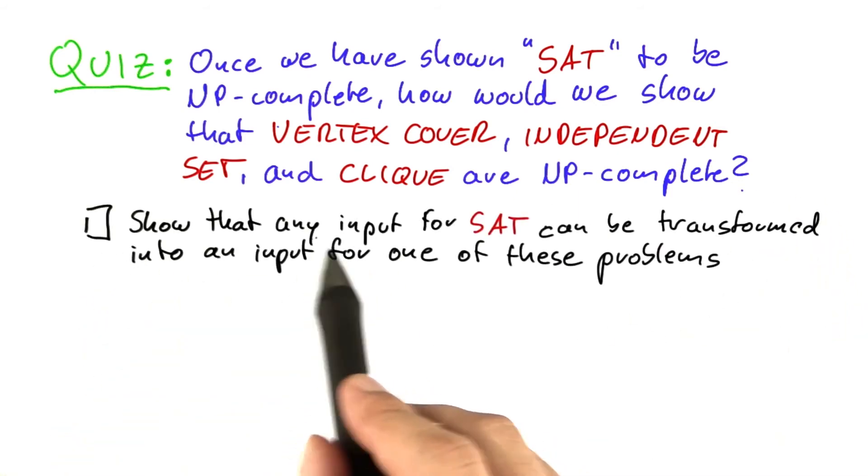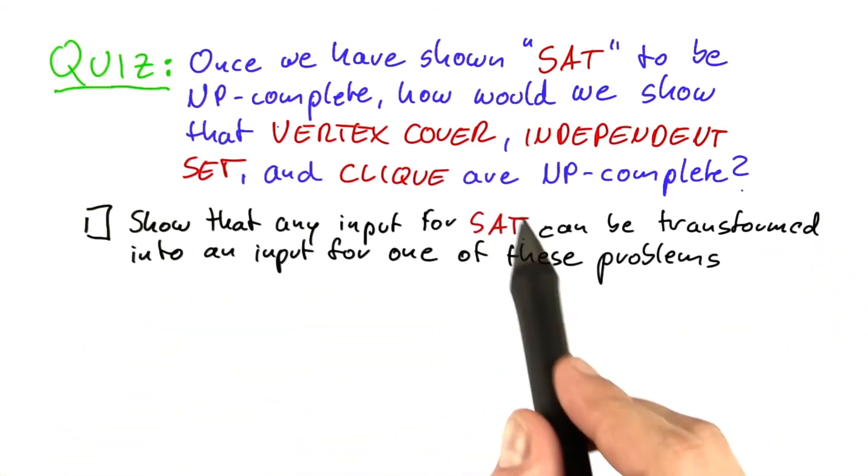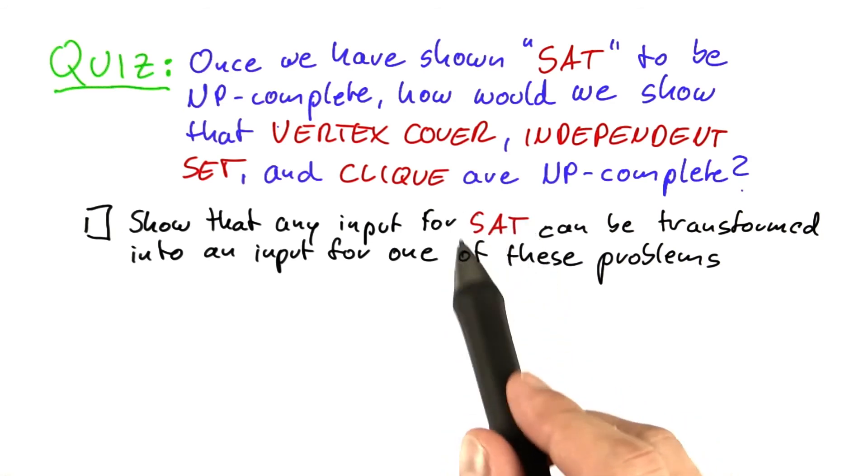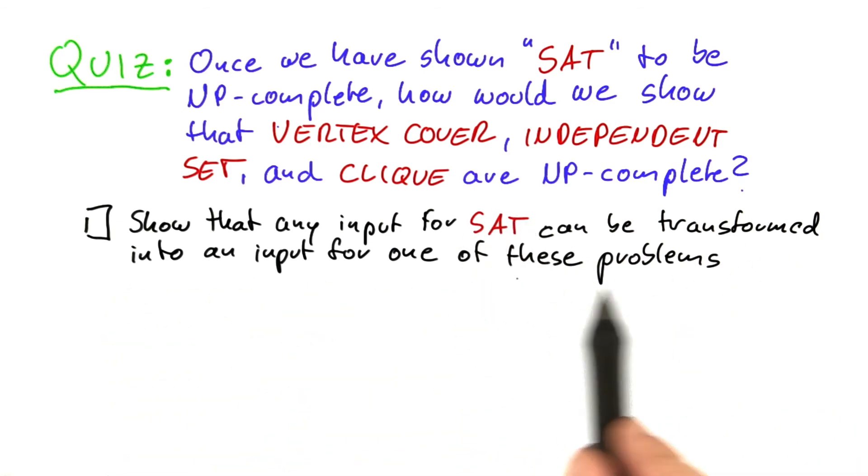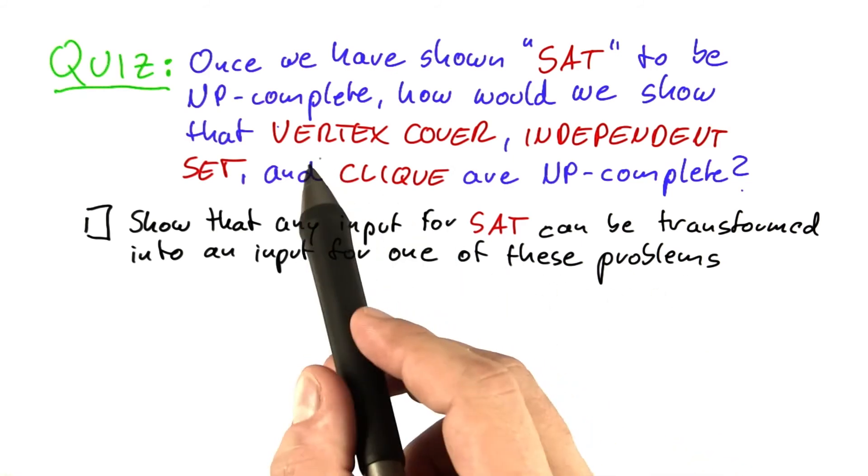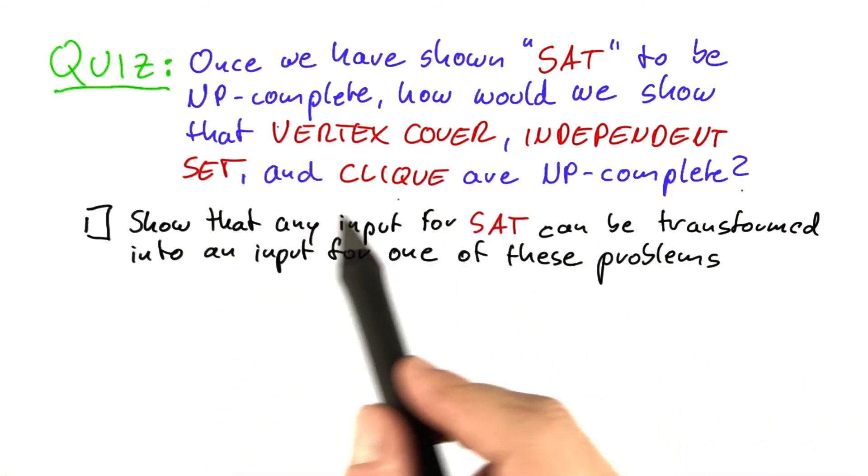Would we have to show that any input for SAT, and I'll soon tell you what that input exactly is, can be transformed into an input for one of these problems? And by these problems, I mean vertex cover, independent set, or clique?